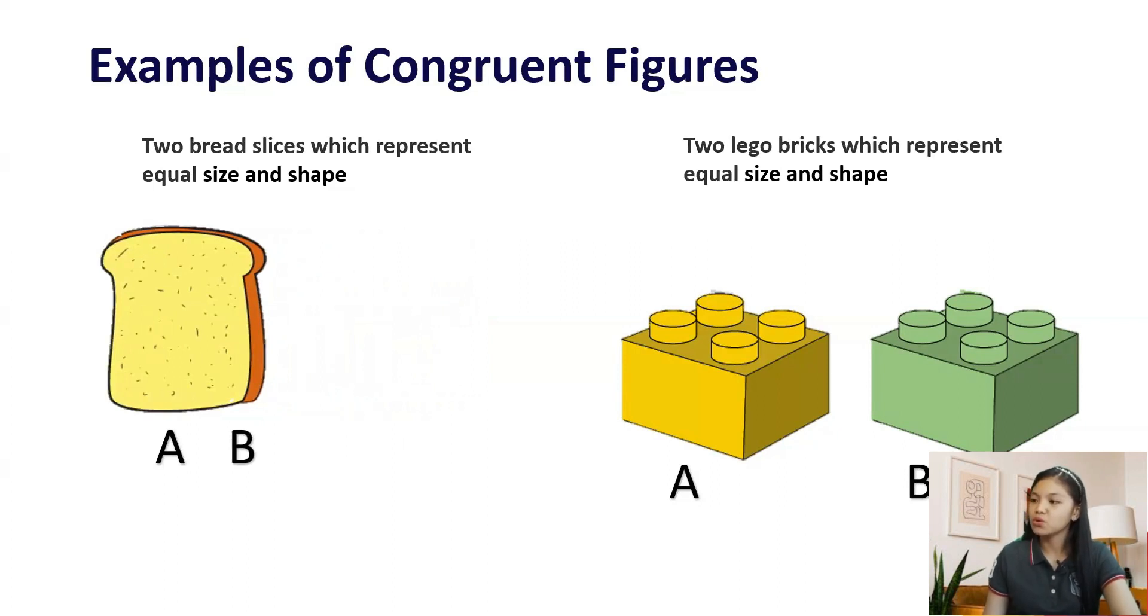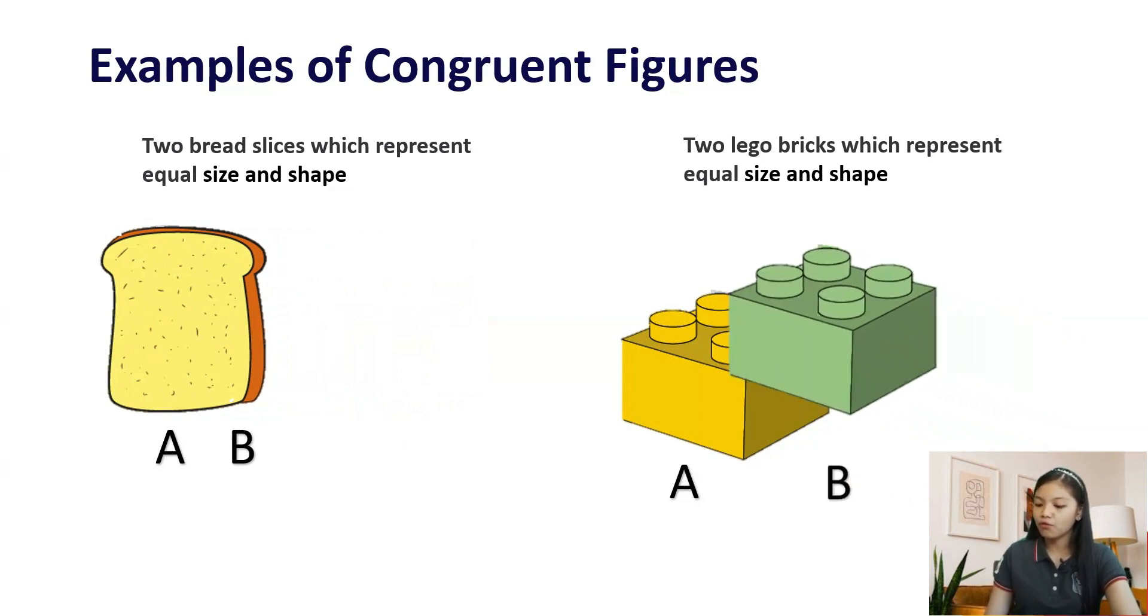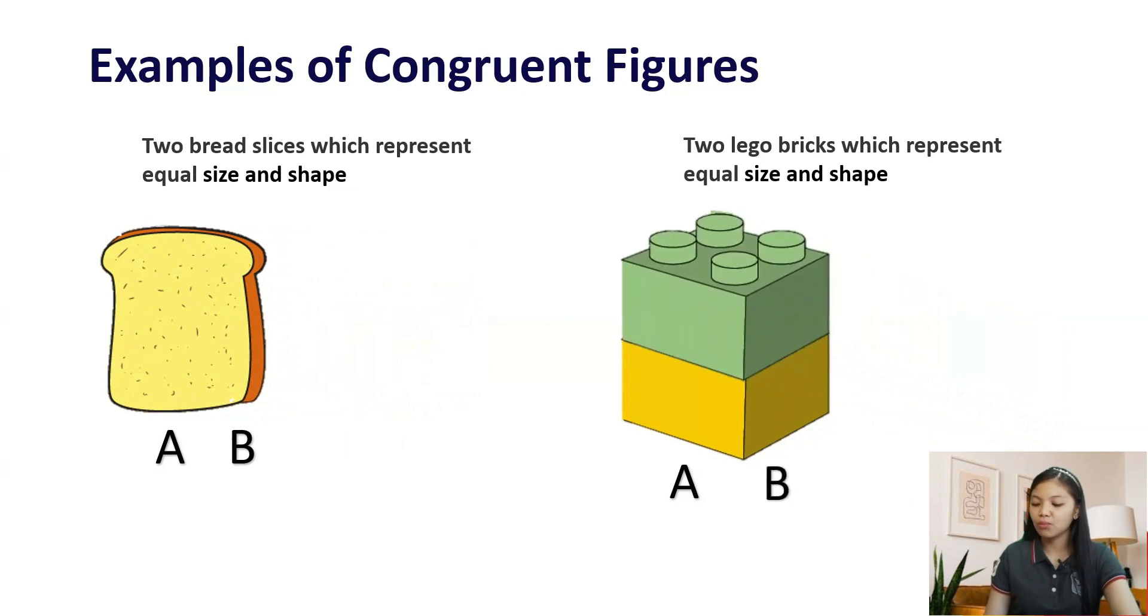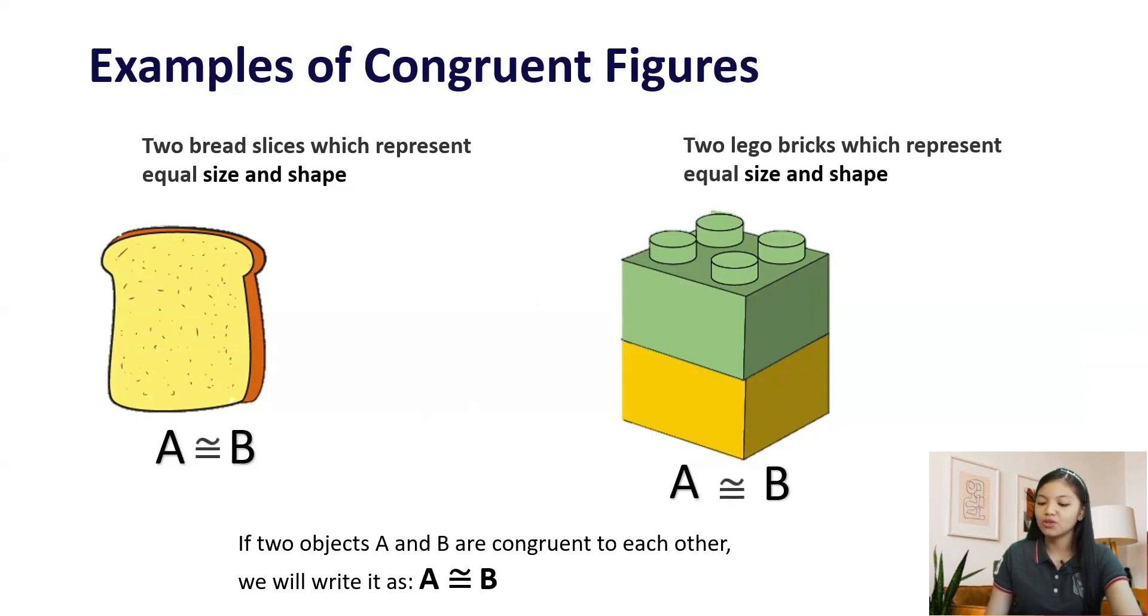Two Lego bricks, which represent equal size and shape. If you place a Lego block over the other, you will find that both the Lego blocks are of equal size and shape. If two objects, A and B, are congruent to each other, we will write it as A is congruent to B.